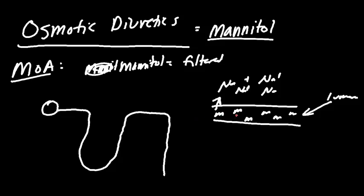Water doesn't want to leave as much because we've introduced more solutes into the lumen — water wants to stay with the solutes. We'll have less sodium reabsorption, less chloride reabsorption, and less potassium reabsorption. Mannitol acts in the water-permeable segments, keeping water inside and making you urinate more. That's the point of an osmotic diuretic — it uses osmotic forces to draw water into the lumen and increase urine outflow.